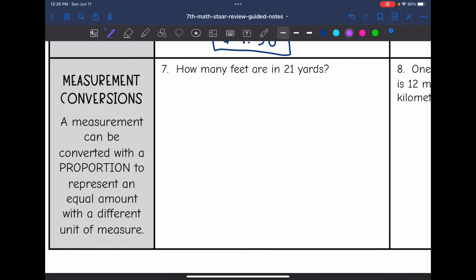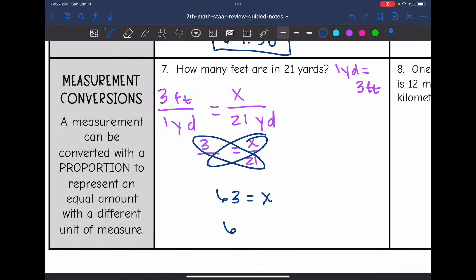So number 7 says how many feet are in 12 yards? Well, we know that 1 yard is equivalent to 3 feet. So we're going to set up our proportion as 3 feet over 1 yard equals we don't know how many feet are in 21 yards. So here's the proportion without the labels. So 3 over 1 equals x over 21. And I can solve this by cross multiplying. 3 times 21 is 63. 1 times x is just x. So that means that there are 63 feet in 21 yards.